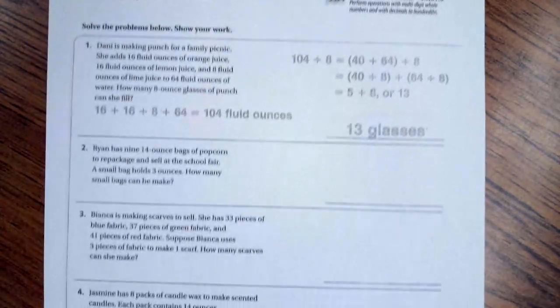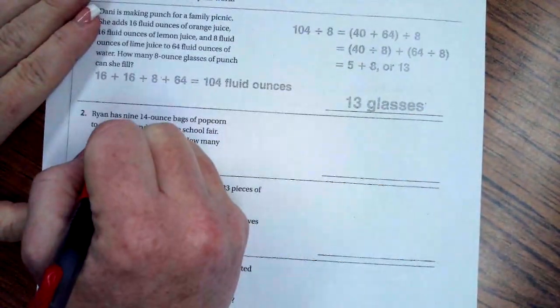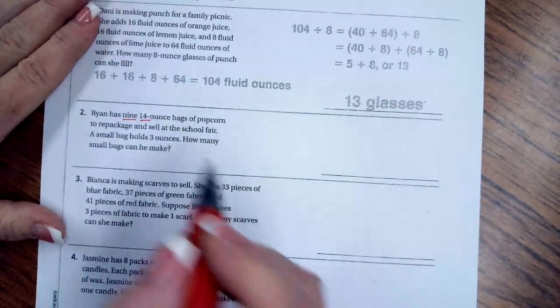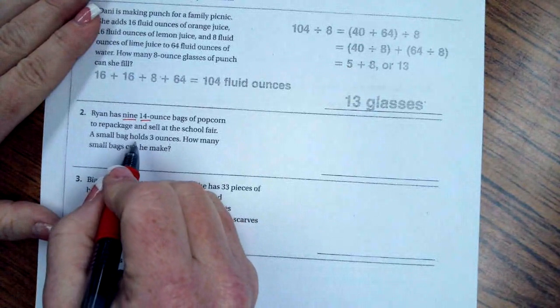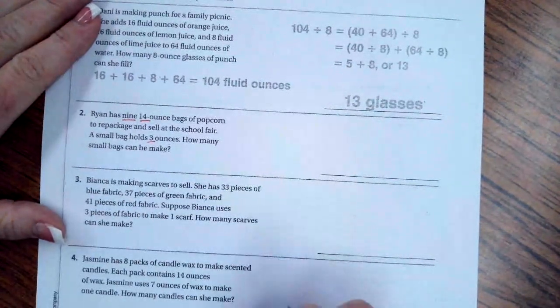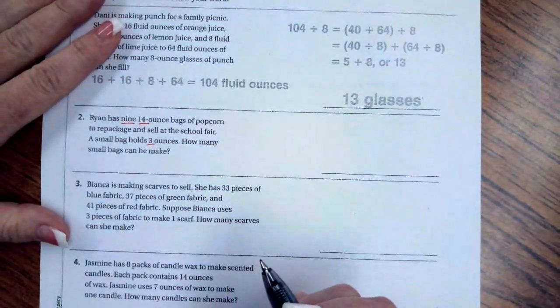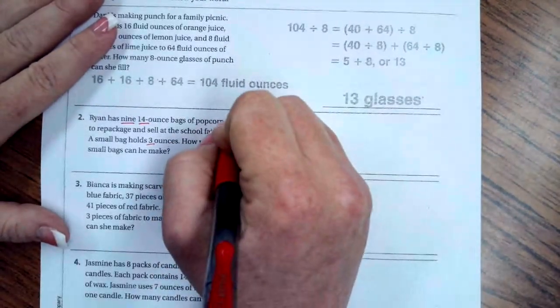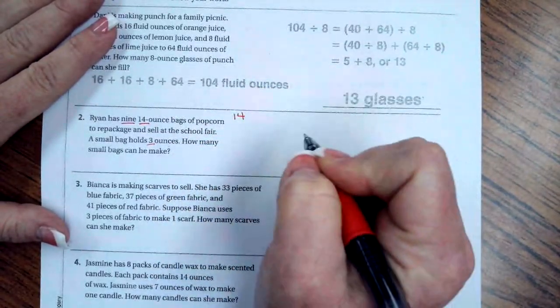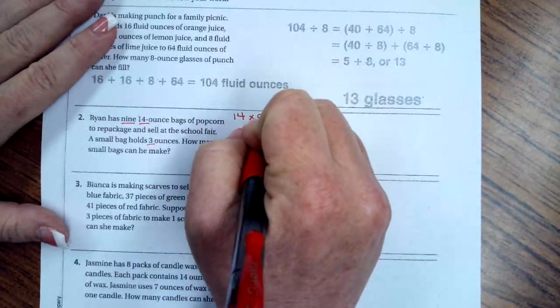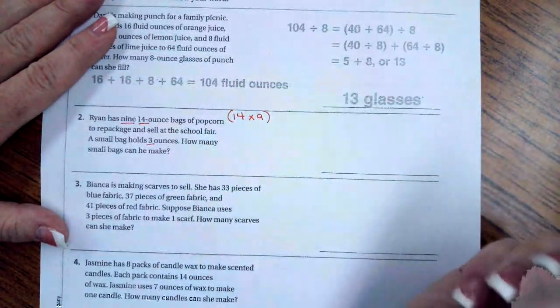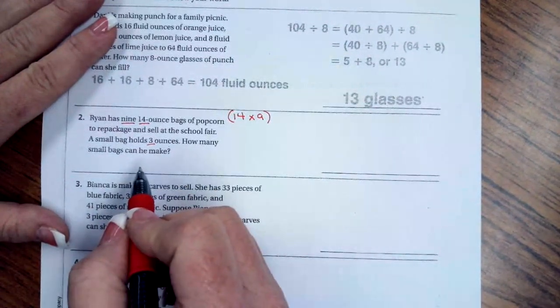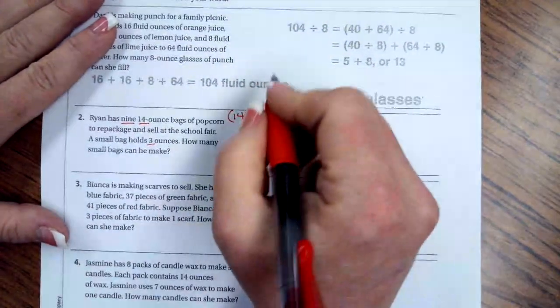These are all two-part problems. Ryan has nine 14-ounce bags of popcorn to sell at the school fair. A small bag holds three ounces. So we have three numbers that we have to work with here. First, we need to know how much popcorn he has all together. Each bag holds 14 ounces, and he has nine of those. Then each bag holds three ounces. How many bags can he make? So they want us to split it back up into three-ounce bags.